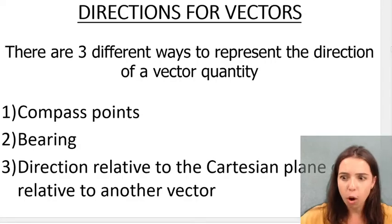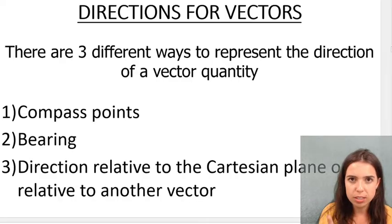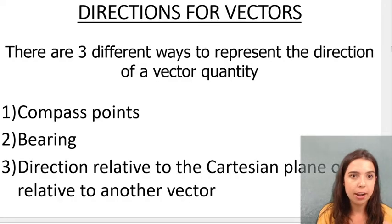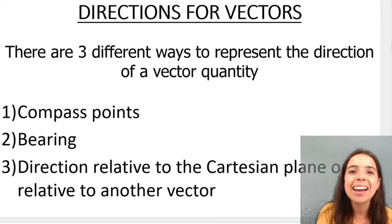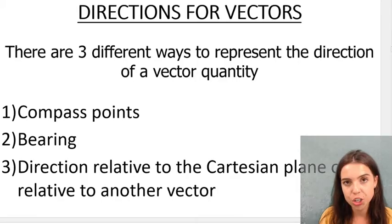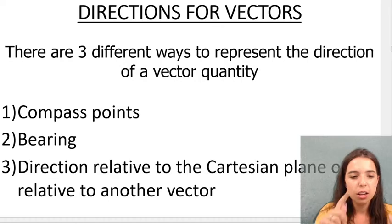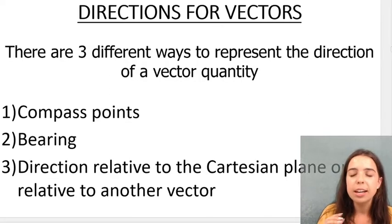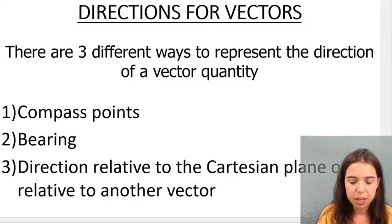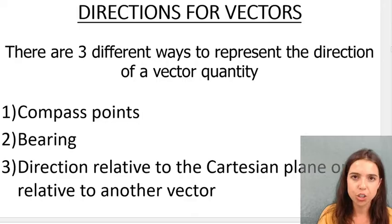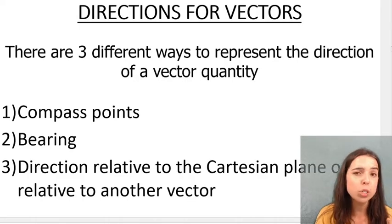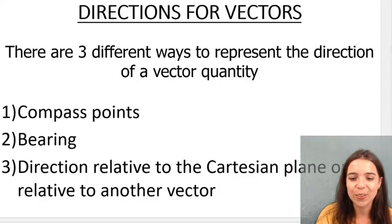I want you to understand that there's multiple different ways that we can state the direction of a vector. Now let's rewind for a second. Vectors are physical quantities that have both magnitude, so size, and direction. That means when I answer a question and I'm dealing with vectors like force, acceleration, velocity, I need to give a direction. And sometimes it's not good enough to say in the positive direction or to the right. Sometimes we need to be a bit more specific, especially when working with angles.